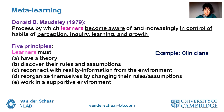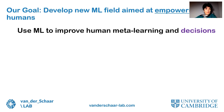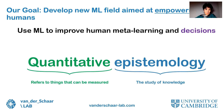Mottsley has defined five principles that learners must adopt to do meta-learning: they must have a theory, discover the rules and assumptions, reconnect with reality information from the environment, reorganize themselves by changing the rules and assumptions, and work in a supportive environment. But it is hard for humans to do such meta-learning tasks. So it is our goal to develop a new machine learning field aimed at empowering humans. We plan to use machine learning to improve human meta-learning as well as decision-making, and for this we have developed quantitative epistemology.